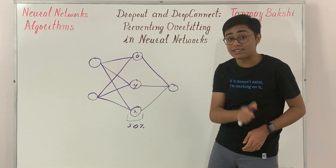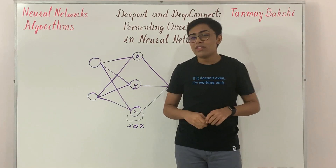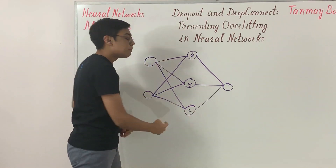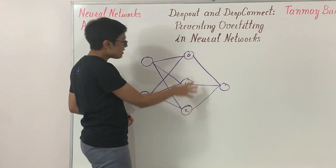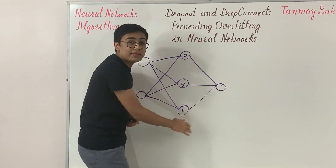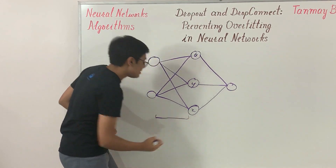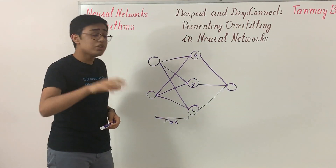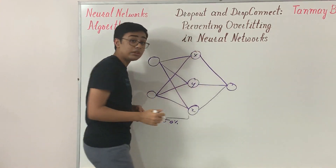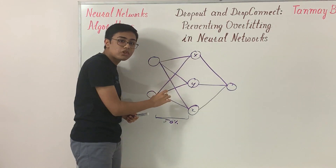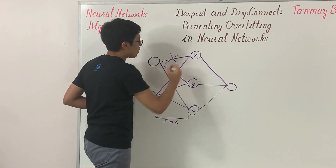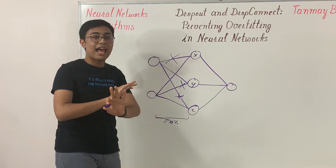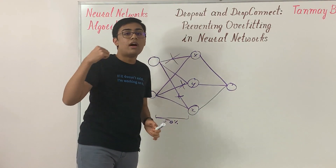Drop connect gets more specific. Instead of applying probabilities to neurons in a layer, you apply them to the weights between layers. So rather than dropping out the actual nodes and their values, you drop out individual connections between nodes — for example, the connection from input one to hidden node x, or input two to hidden node y. Each weight has a 50% chance of being dropped.